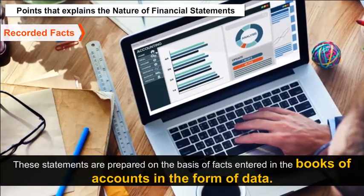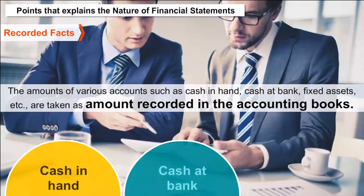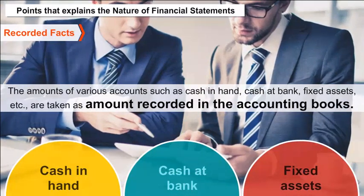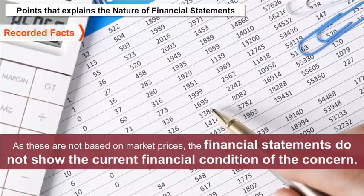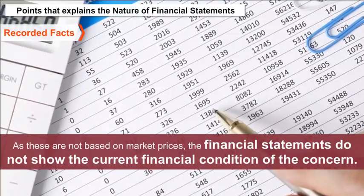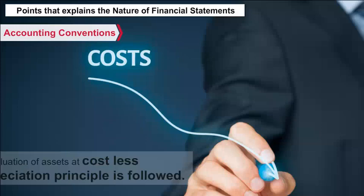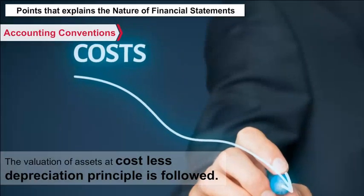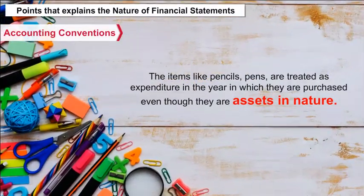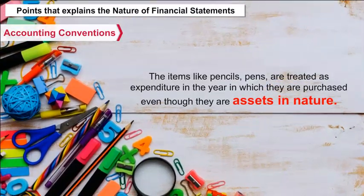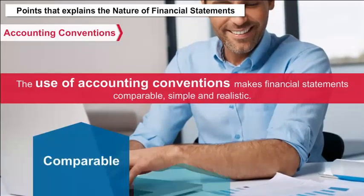Recorded facts: these statements are prepared on the basis of facts entered in the books of accounts in the form of data. The amounts of various accounts such as cash in hand, cash at bank, fixed assets, etc., are taken as amounts recorded in the accounting books. As these are not based on market prices, the financial statements do not show the current financial condition of the concern. Accounting conventions: many conventions are followed in making financial statements. The valuation of assets at cost less depreciation principle is followed. Items like pencils and pens are treated as expenditure in the year in which they are purchased, even though they are assets in nature. The use of accounting conventions makes financial statements comparable, simple, and realistic.